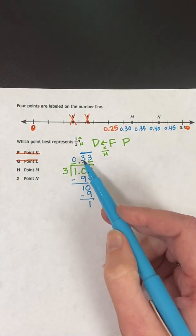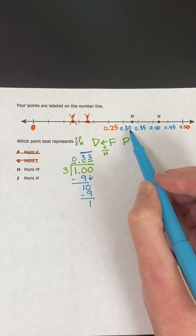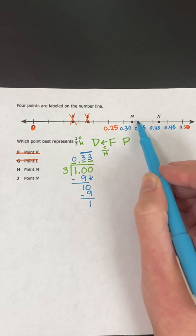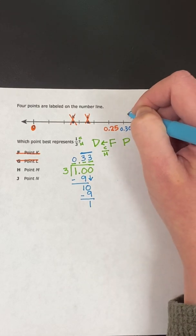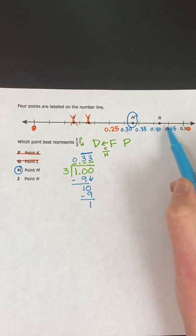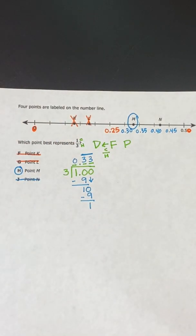So again, I have thirty-three cents. My one-third represents thirty-three cents. So that would probably be between thirty and thirty-five cents. So my answer there would be point M. N is between forty and forty-five cents. And we know thirty-three is not there.